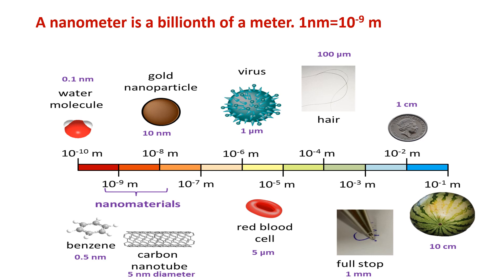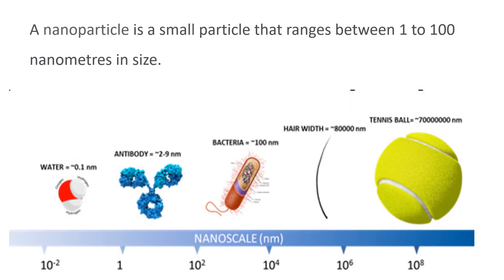From this figure, it is clear that on moving from watermelon to water molecule, the size of the particle is reduced. A nanoparticle is a small particle that ranges between 1 to 100 nanometers in size. Another picture also shows the relative dimensions of various objects: a water molecule is 0.1 nanometers, an antibody is 2.9 nanometers, a bacterium is 100 nanometers, the width of a hair is 80,000 nanometers, and a tennis ball is 70 million nanometers.